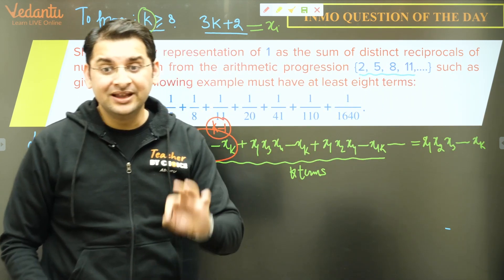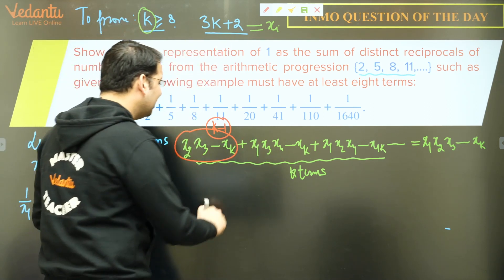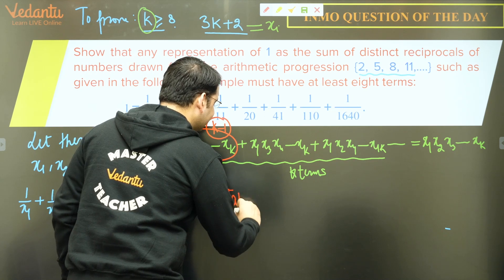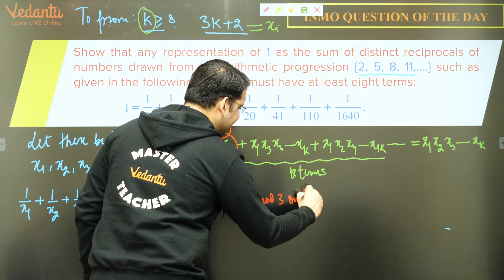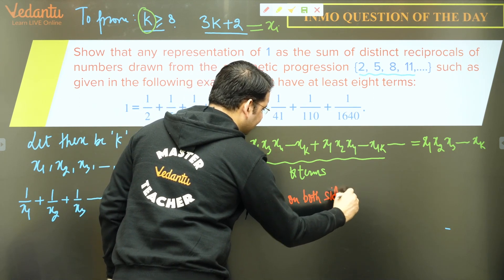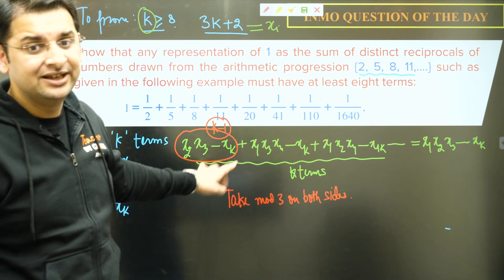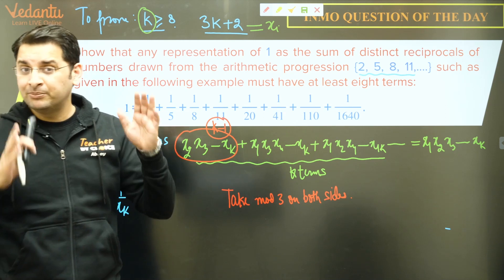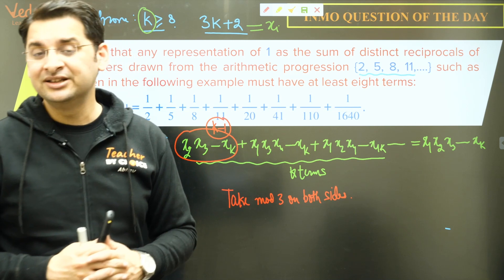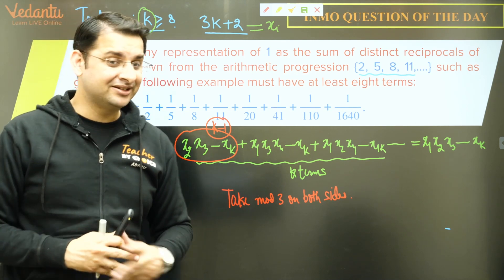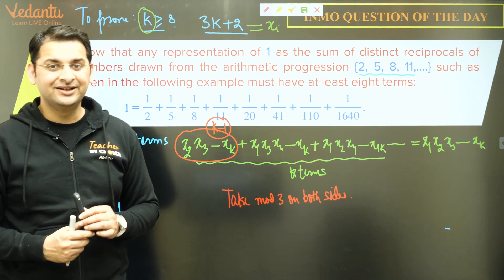Every term is of the form 3k + 2. So if I take mod 3 on both sides, I think we will be done. This is the second hint: try to take mod 3 on both sides and see if you can reach the result. Take around 3–4 minutes, pause this video, and you should be able to get to the result.